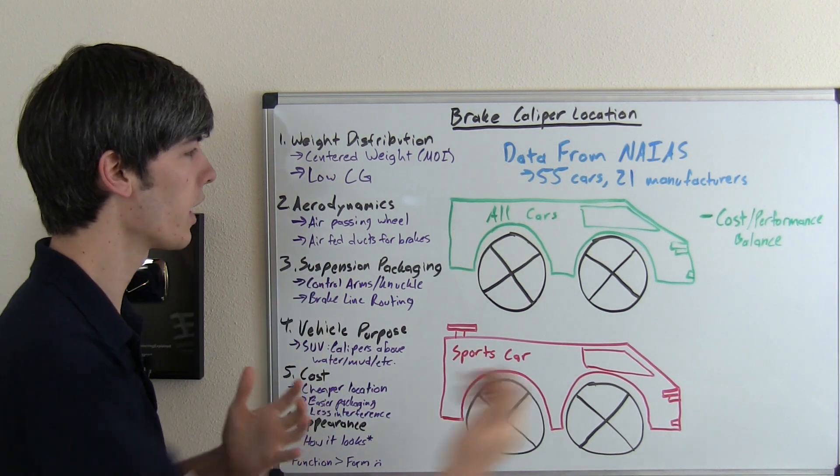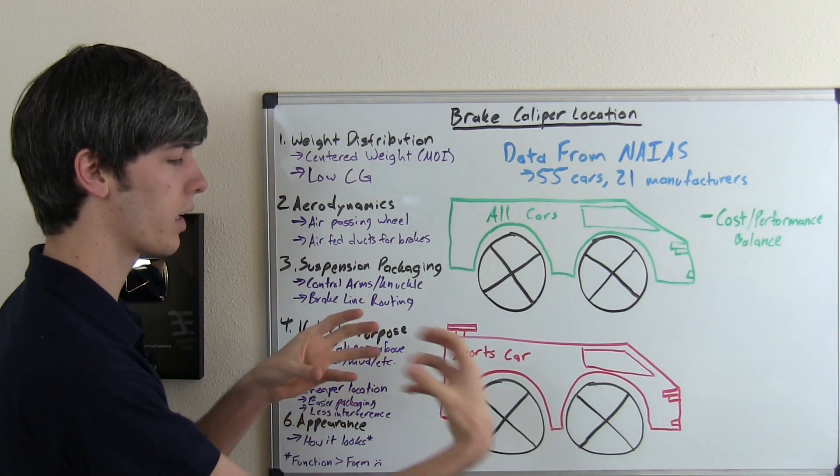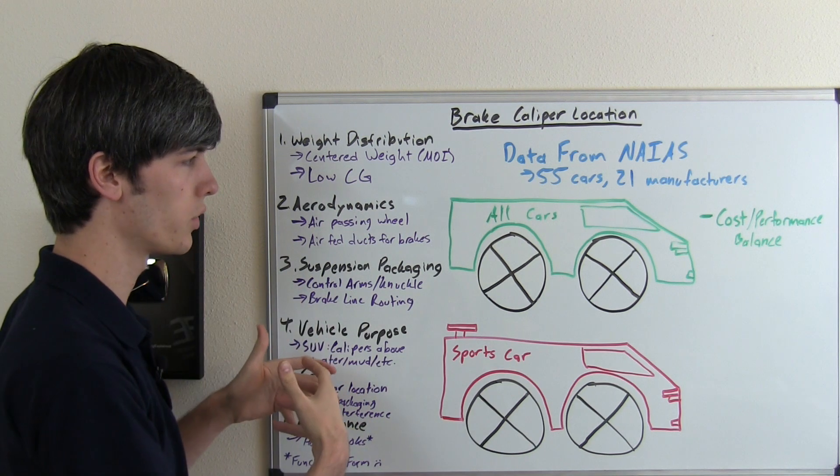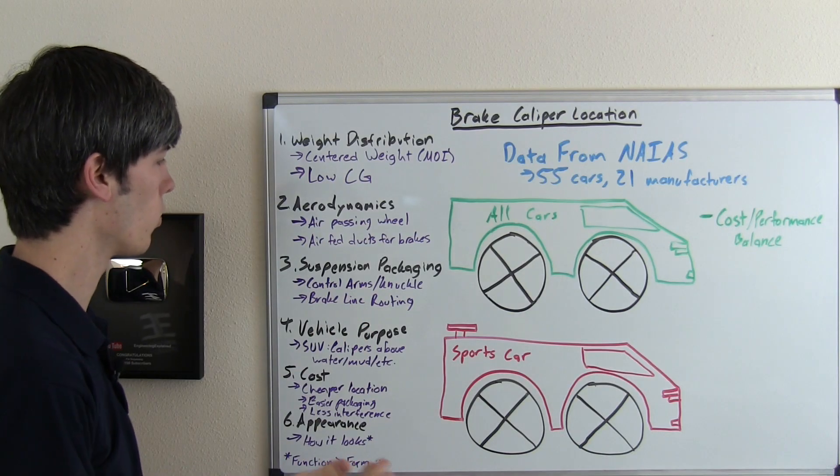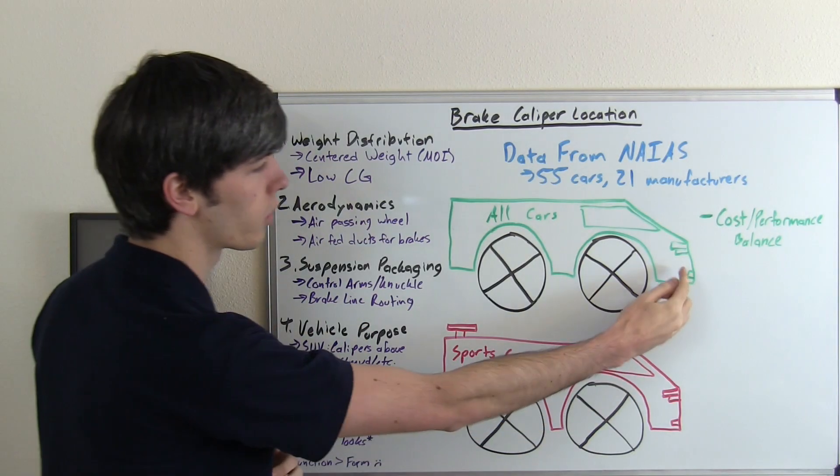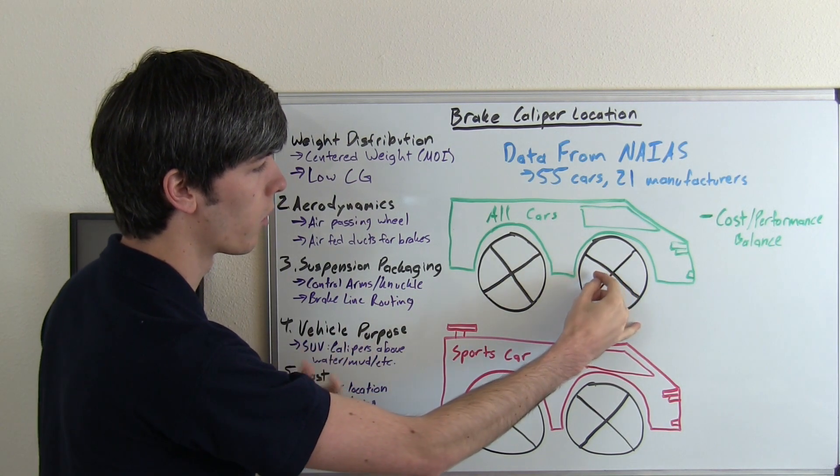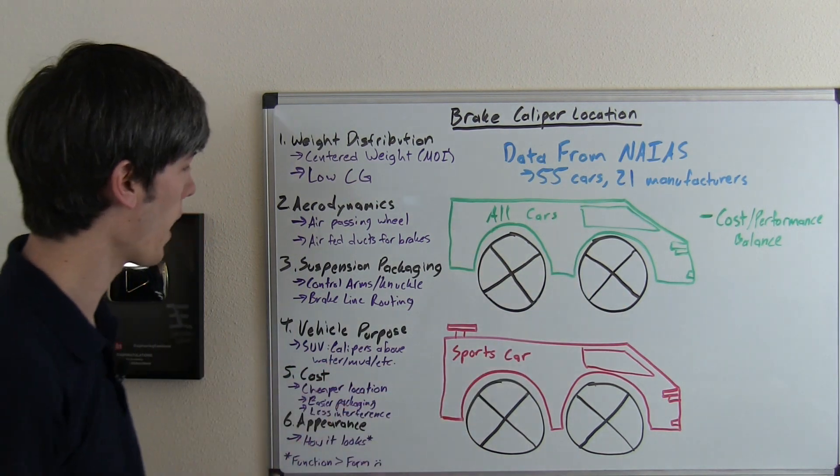Also if you have ducts for the air to feed the front brakes or the rear brakes you may want to have that duct positioned so that it blows air onto the brake itself not onto the caliper. So that could play a role in where you place the caliper depending on how you have that air duct routed. And you may want to have a shorter routing so that you blow it up towards the front rather than a longer routing which is more complicated, costs a bit more, adds more complexity to route the air towards the back.